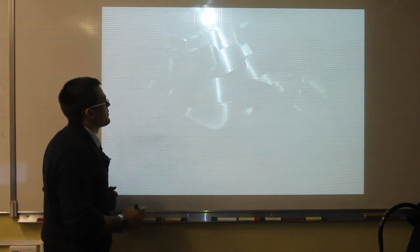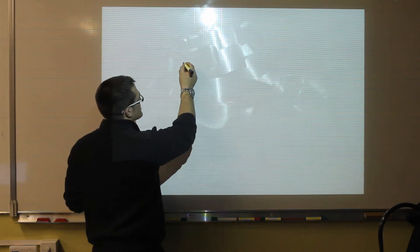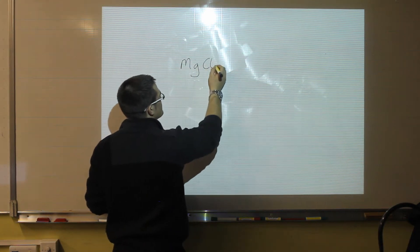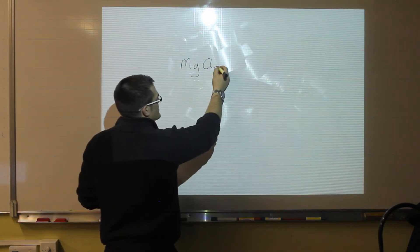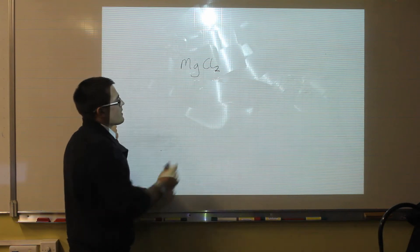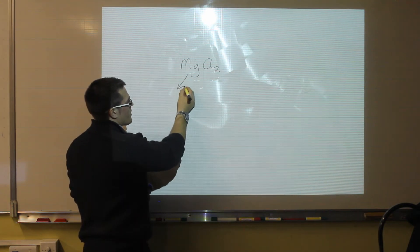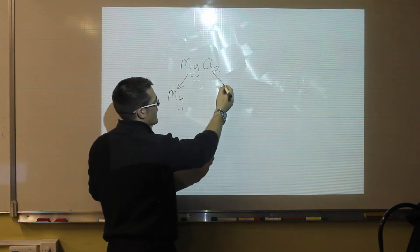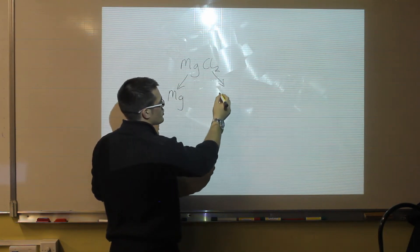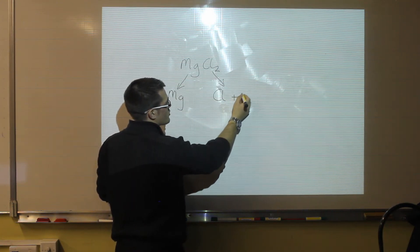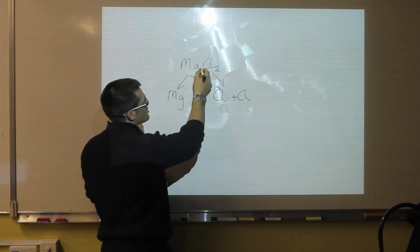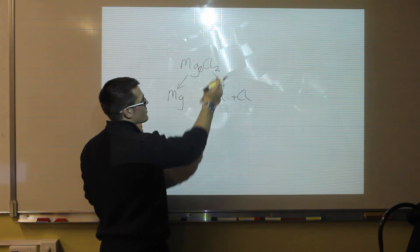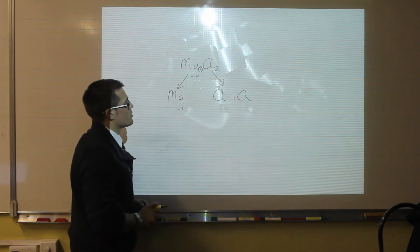Let's look at one more example. If we have magnesium chloride, which has a two in the bottom corner, if we break this ionic compound apart, we have one atom of magnesium and we have two atoms of chlorine. Because there is no number next to the magnesium, that means we have the imaginary one, and there is a two there which means two atoms of chlorine.